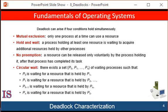A deadlock situation can arise if the following four conditions hold simultaneously in a system. The first is mutual exclusion. At least one resource must be held in a non-shareable mode — that is, only one thread at a time can use the resource. If another thread requests that resource, the requesting thread must be delayed until the resource has been released.